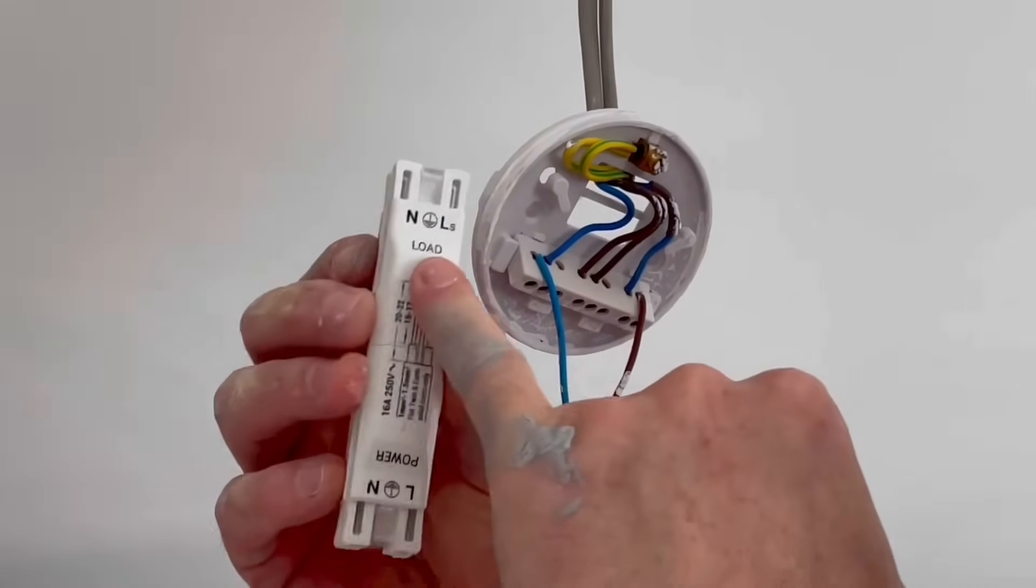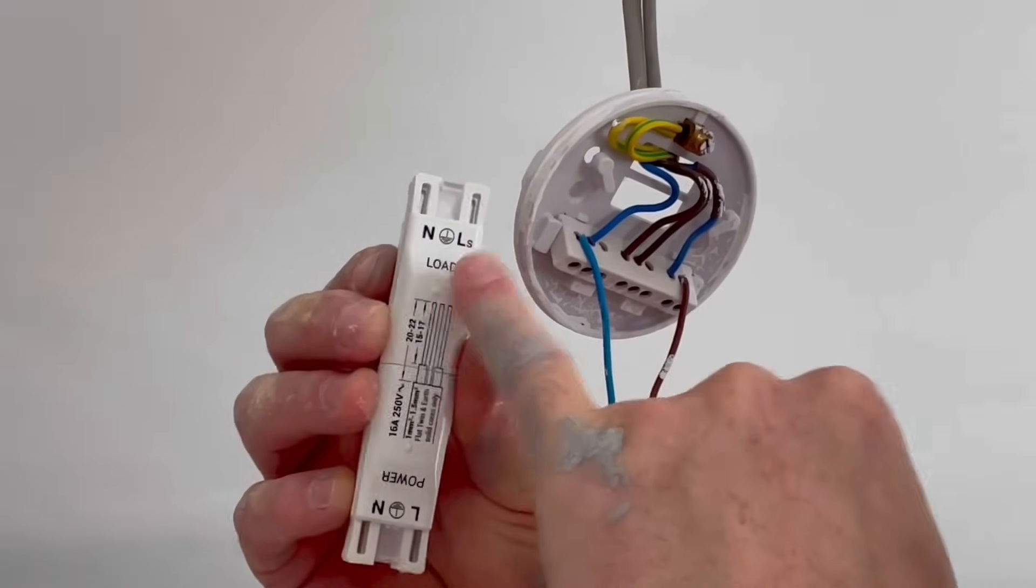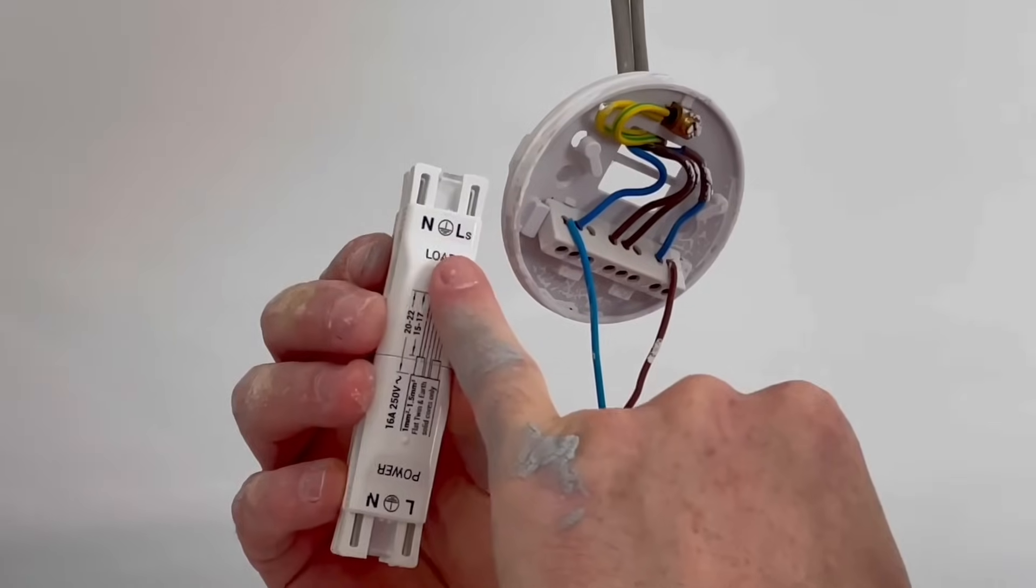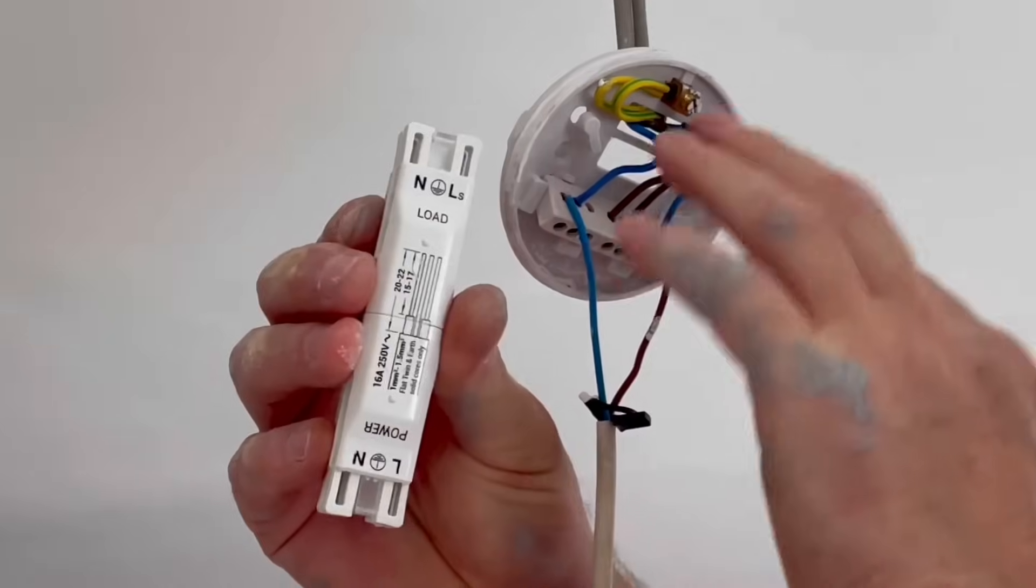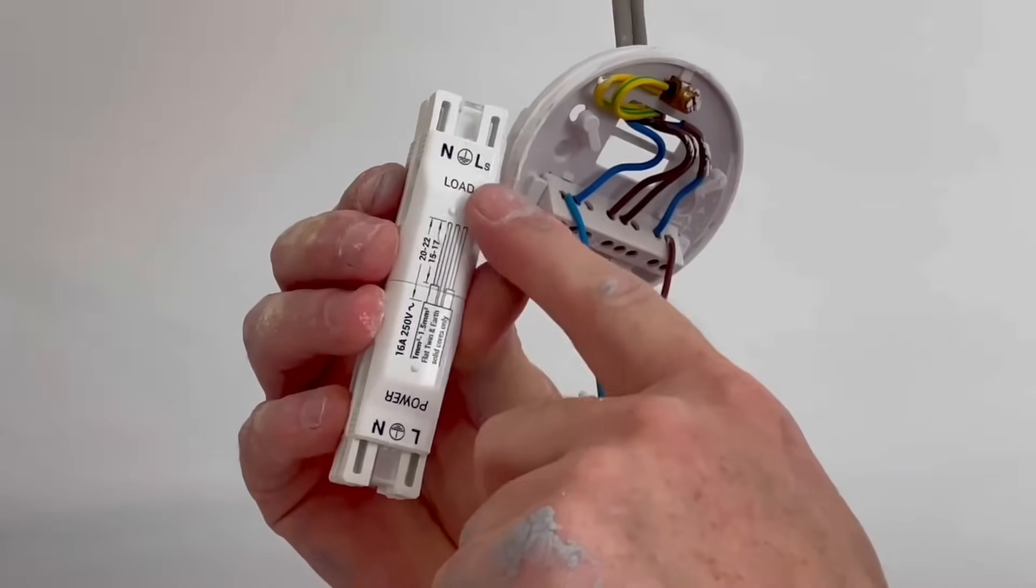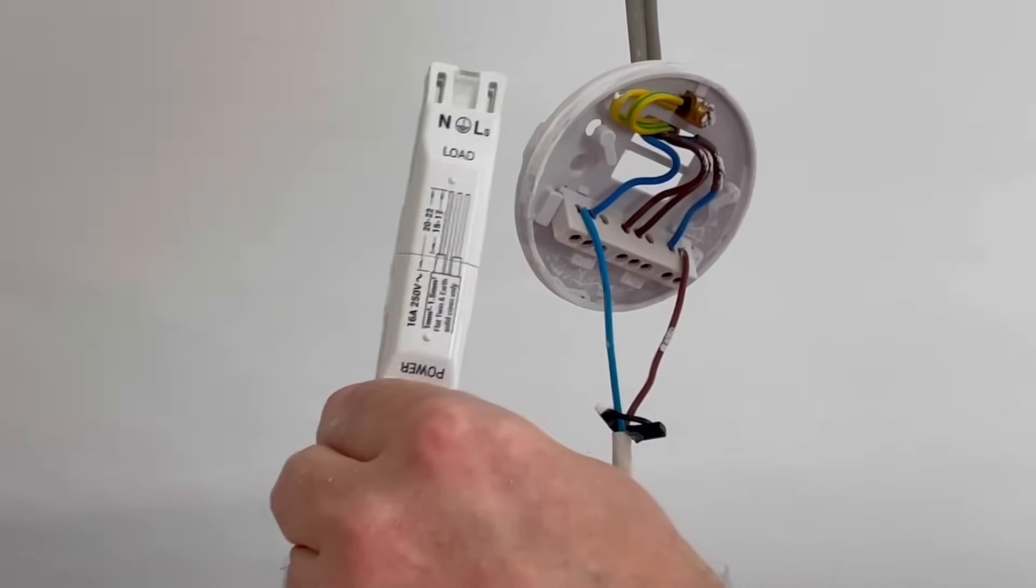And then our new cable which comes down to our LED light or load will have our switching line, neutral and CPC. I've already connected that into the LED light fitting and it just clips into here. So let's take the connections out of our ceiling rose and make them into here before we pop this into the ceiling and we can fit our LED light fitting.